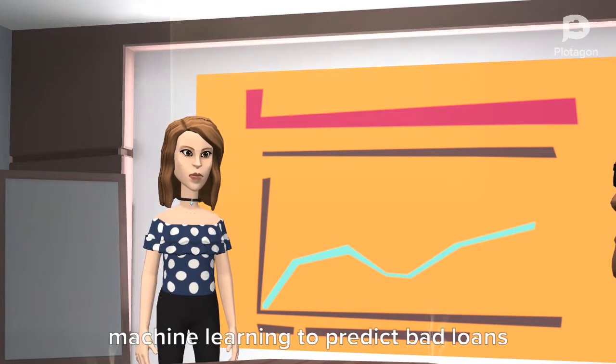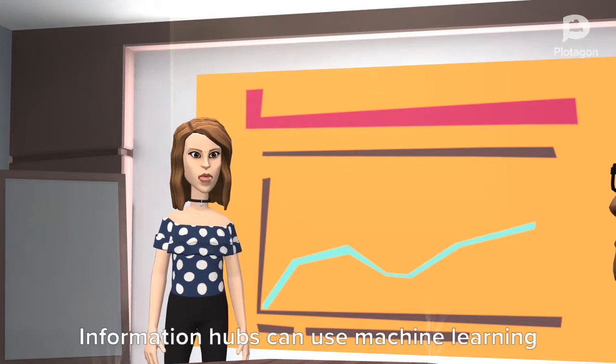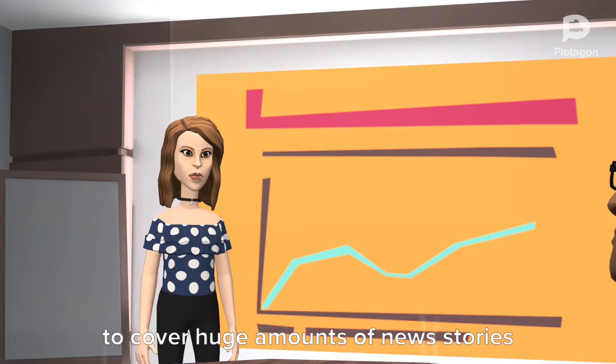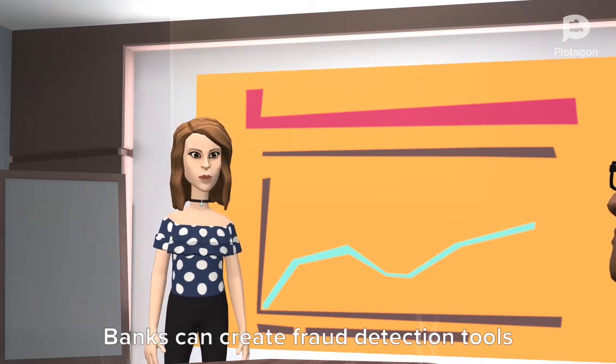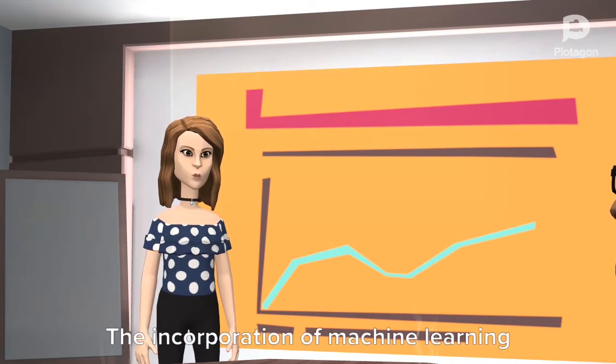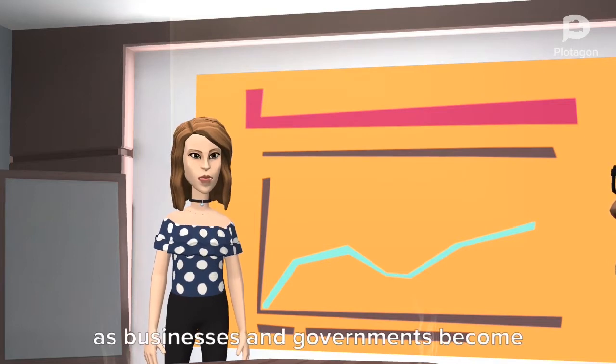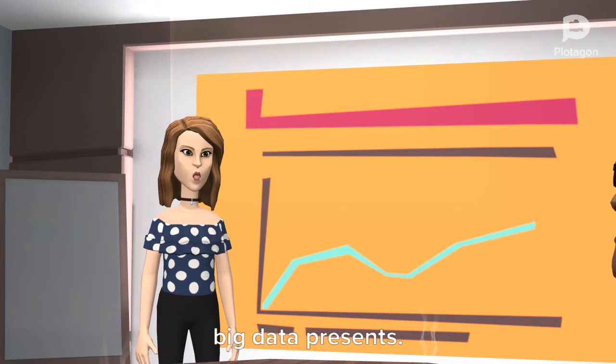Lending institutions can incorporate machine learning to predict bad loans and build a credit risk model. Information hubs can use machine learning to cover huge amounts of news stories from all corners of the world. Banks can create fraud detection tools from machine learning techniques. The incorporation of machine learning in the digital savvy era is endless as businesses and governments become more aware of the opportunities that big data presents.